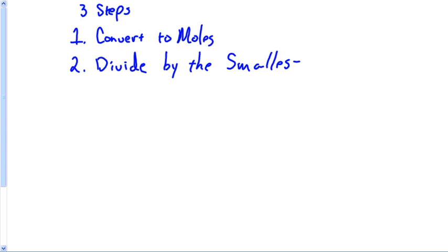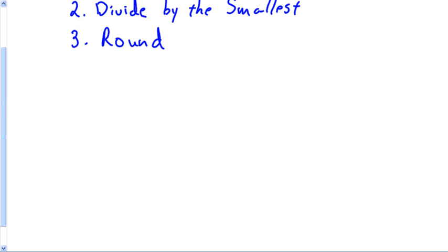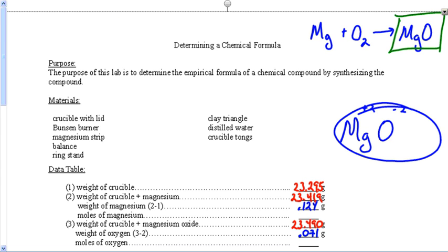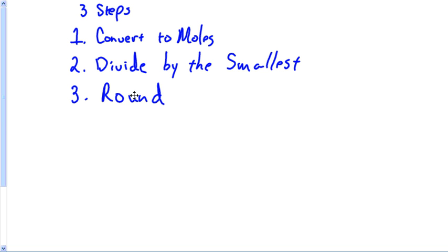Then we're going to get an answer, we'll divide by the smallest, and this will be the same thing we do on an exam. And then number three, we round. Hey, this actually sounds like kind of an easy problem. It is. So I need to get my two masses. So one more time: my two masses was 0.124 and 0.071.